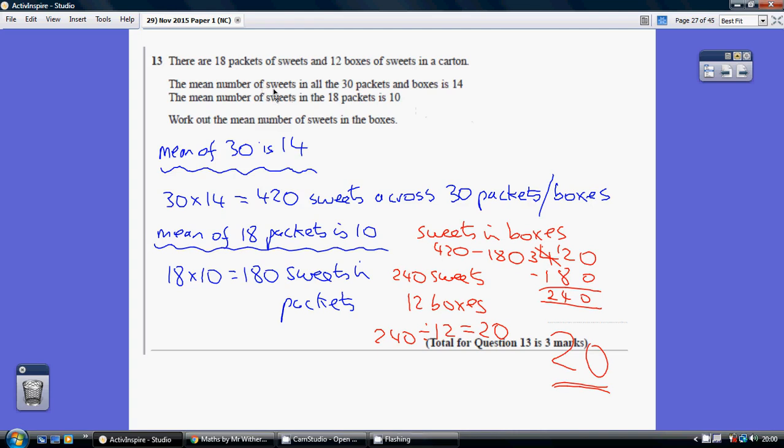So first things first, we're told that the mean number of sweets in both the packets and the boxes is 14. We've got 30 packets and boxes - 18 packets, 12 boxes. So the mean of the 30 is 14.